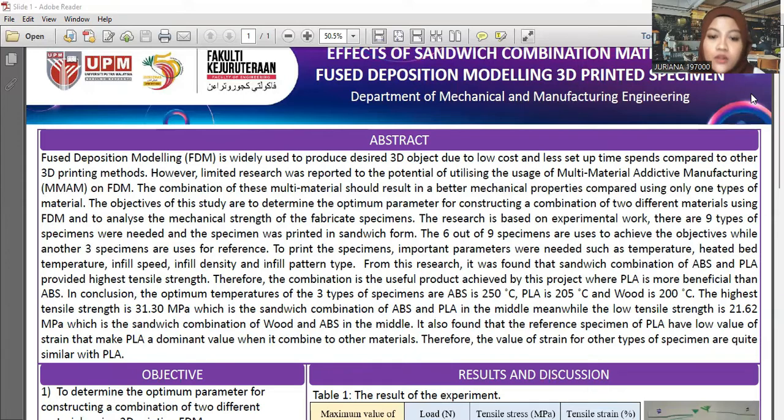The highest tensile strength value is 31.30 MPa, which is the sandwich formation of PLA and ABS with PLA in the middle. The lowest tensile strength is 21.62 MPa, which is the combination of wood and ABS with ABS in the middle. It was also found that the reference specimen of PLA has a low value of strain, making it a dominant value when combined with other materials.